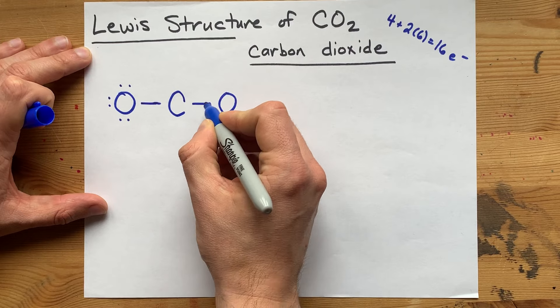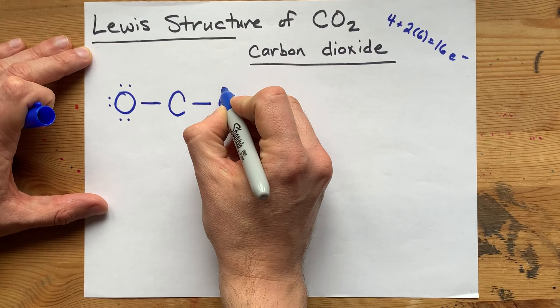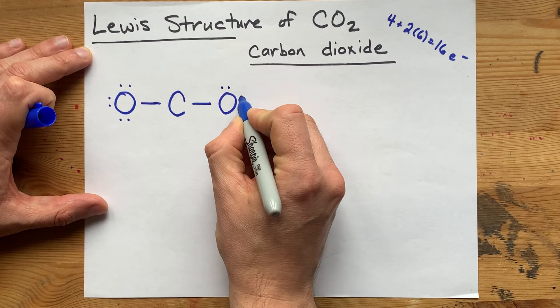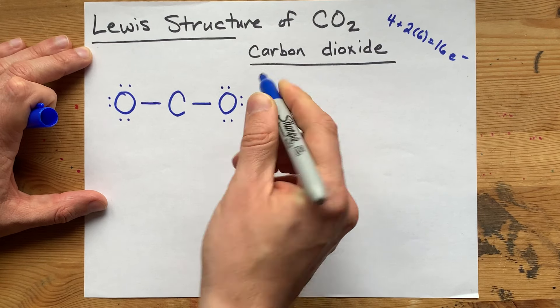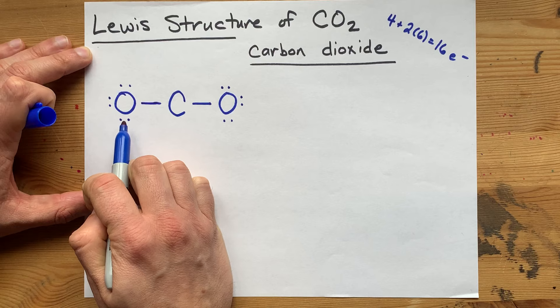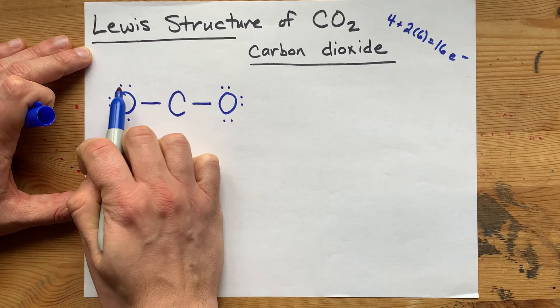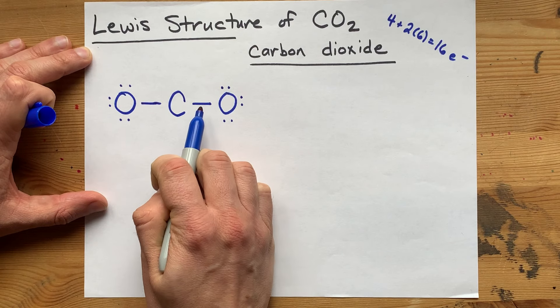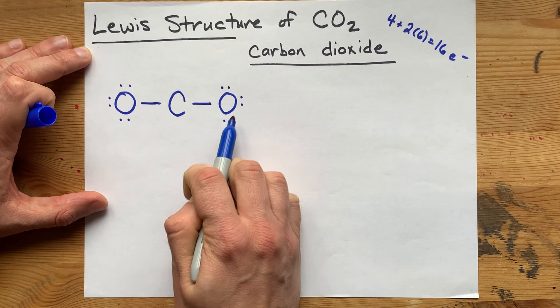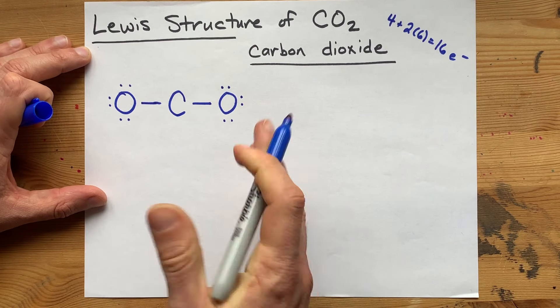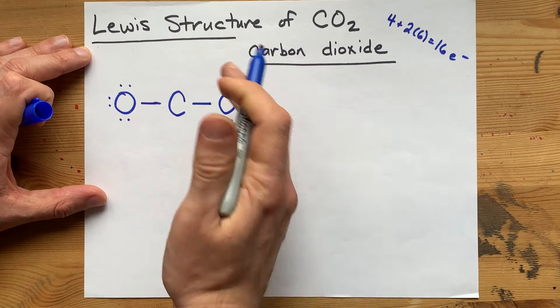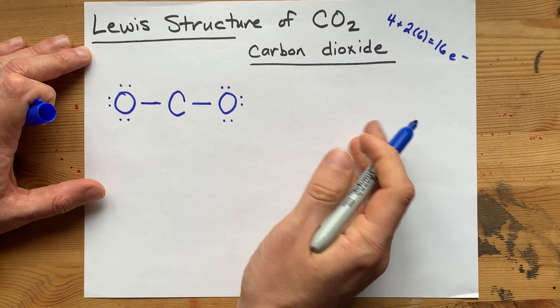This oxygen already has two, so now 3, 4, 5, 6, 7, 8. That's already 2, 4, 6, 8, 10, 12, 14, 16 — that's already the 16 electrons that I'm allowed to use.